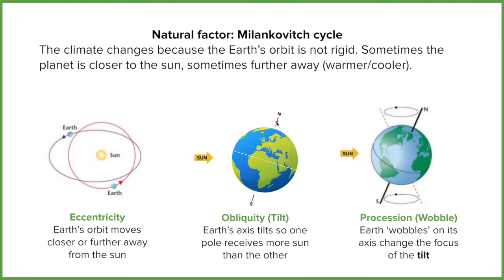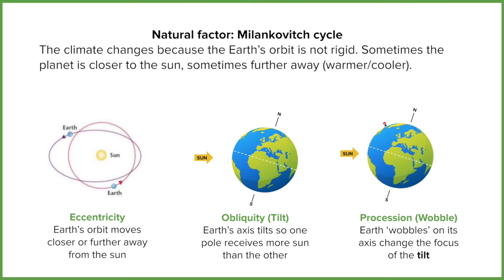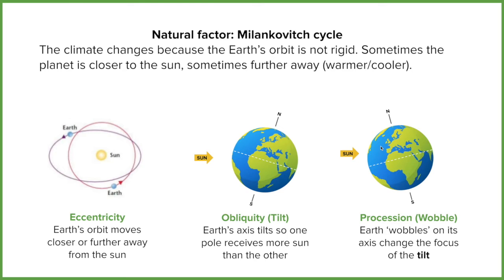Precession is also known as the wobble. The axis doesn't stay in its same position — it orbits on its own little rotation as well. This means the obliquity doesn't stay in the same place; it's going to flip. So you can see here the southern hemisphere is getting the sunlight, then the axis does a rotation and leaves the northern hemisphere in the sunlight. This is the Milankovitch cycle — different areas of the earth are getting more direct sunlight than others, and we're closer or further away from the sun.